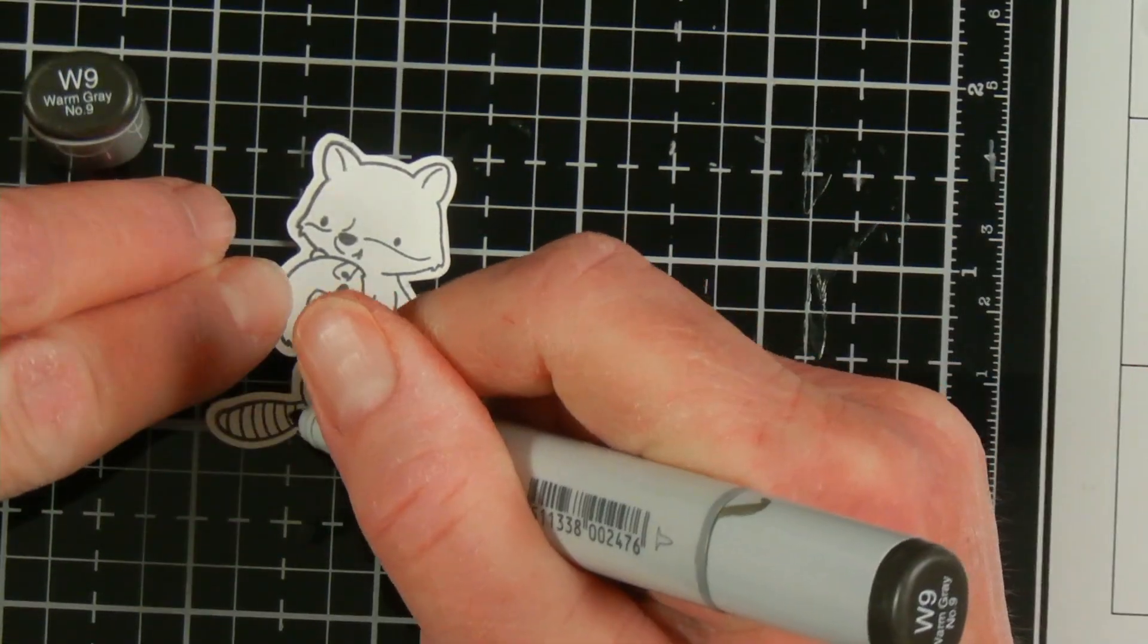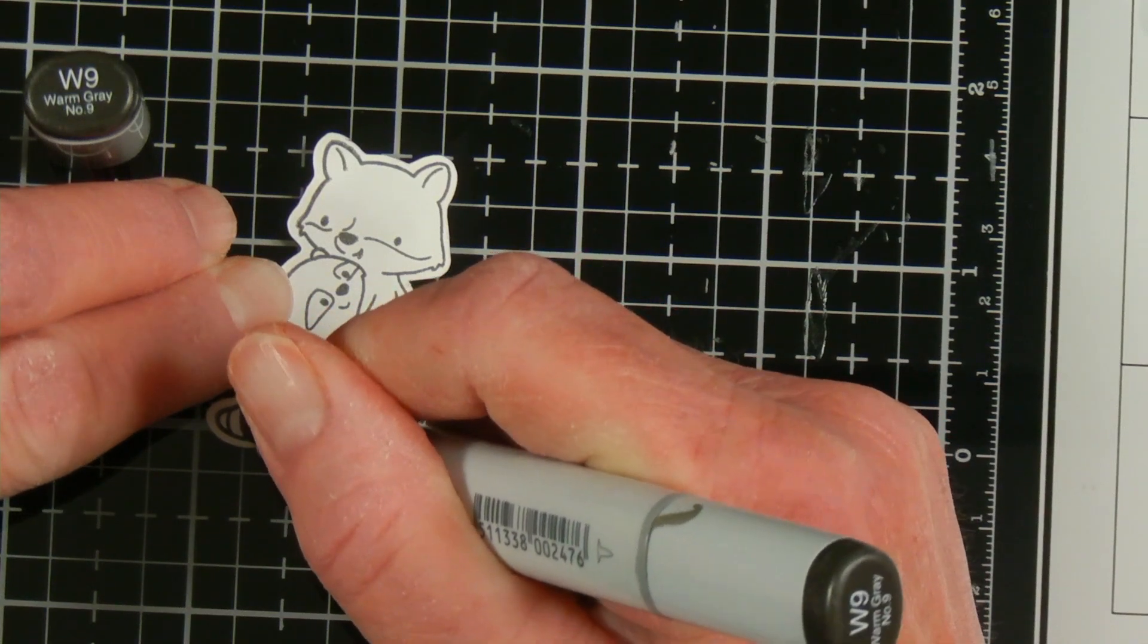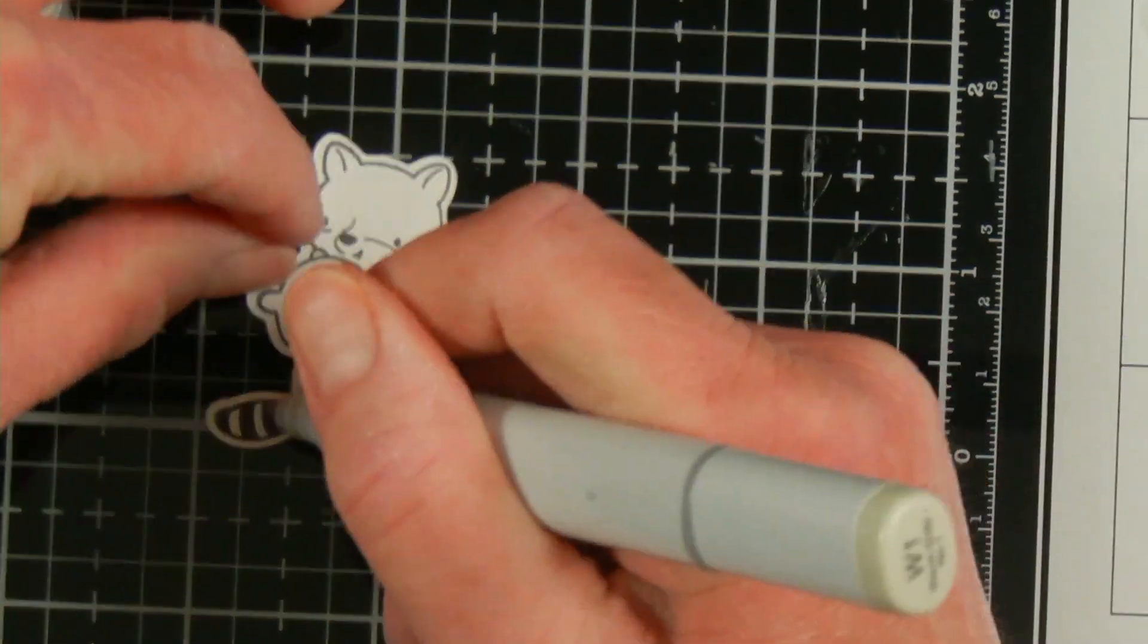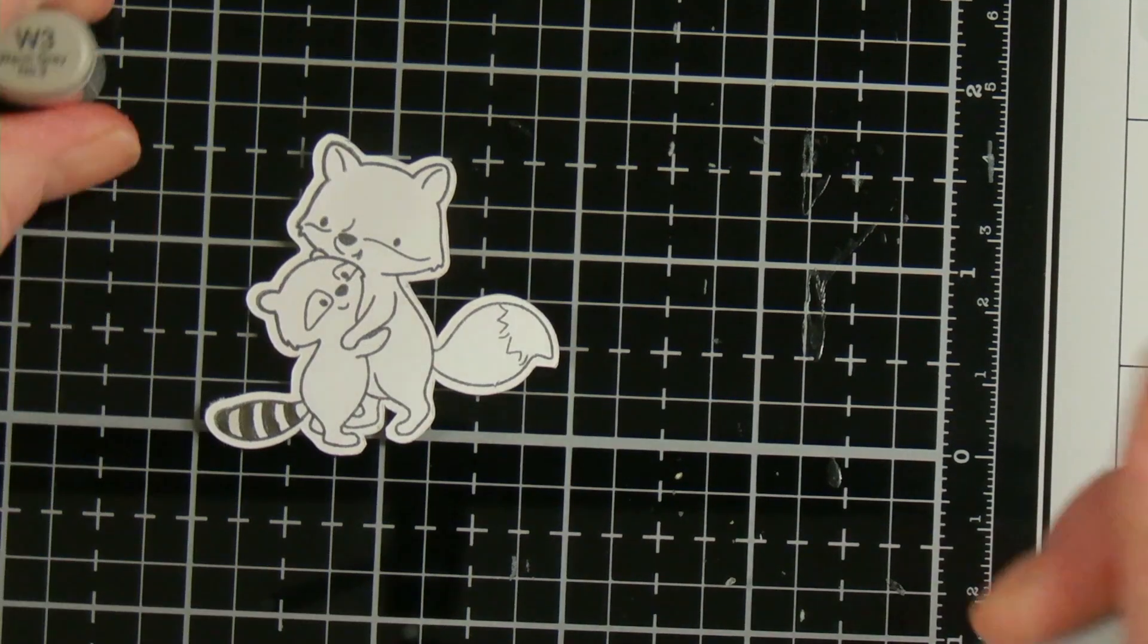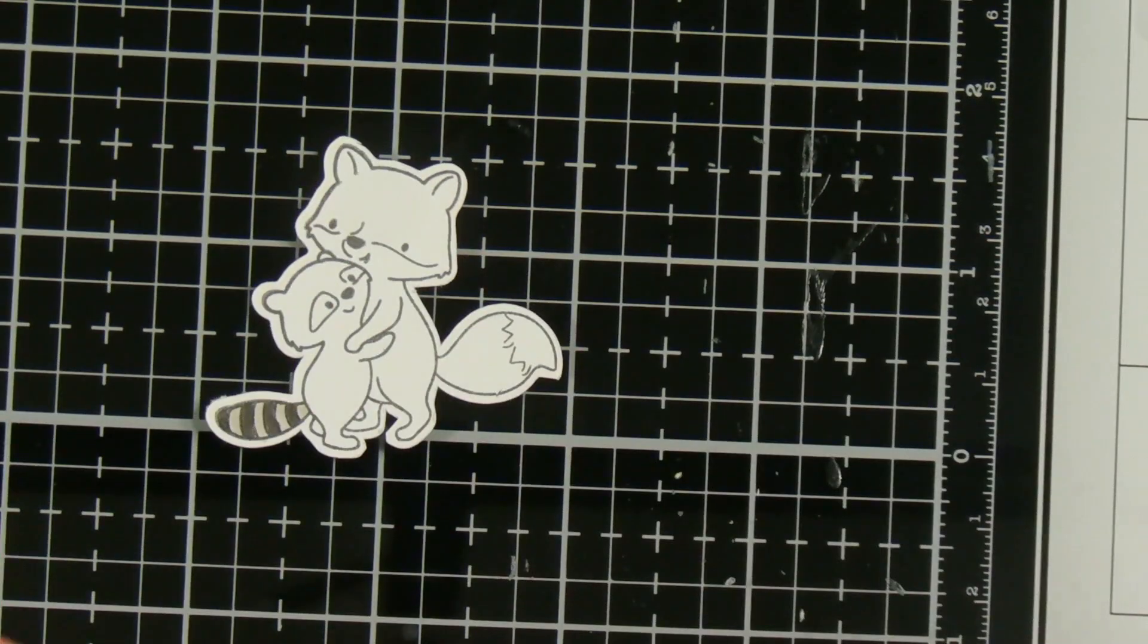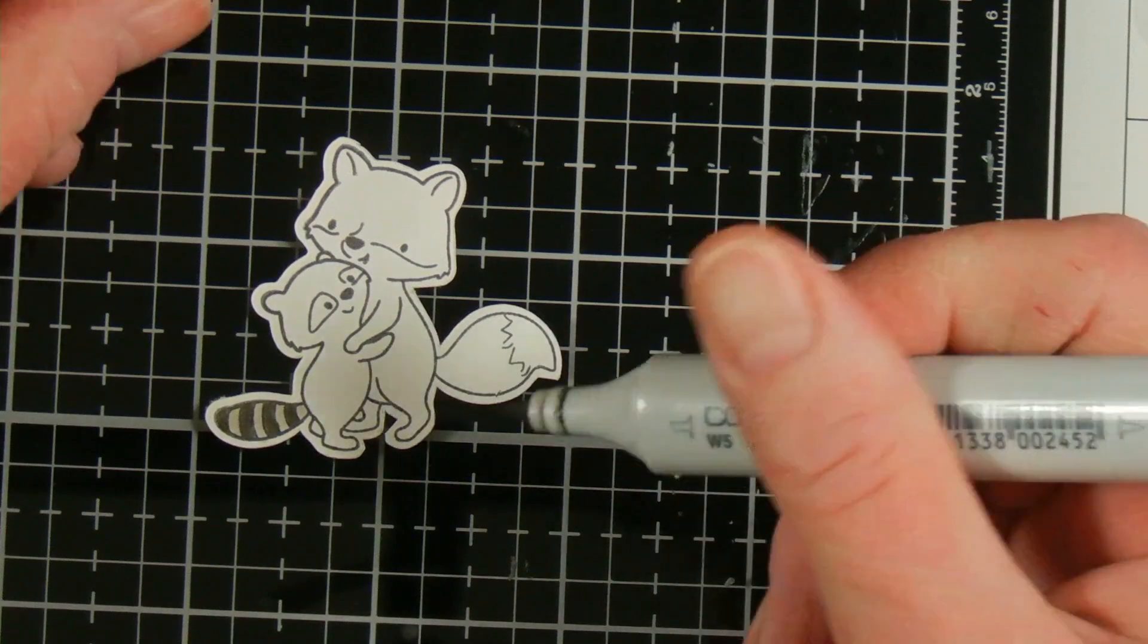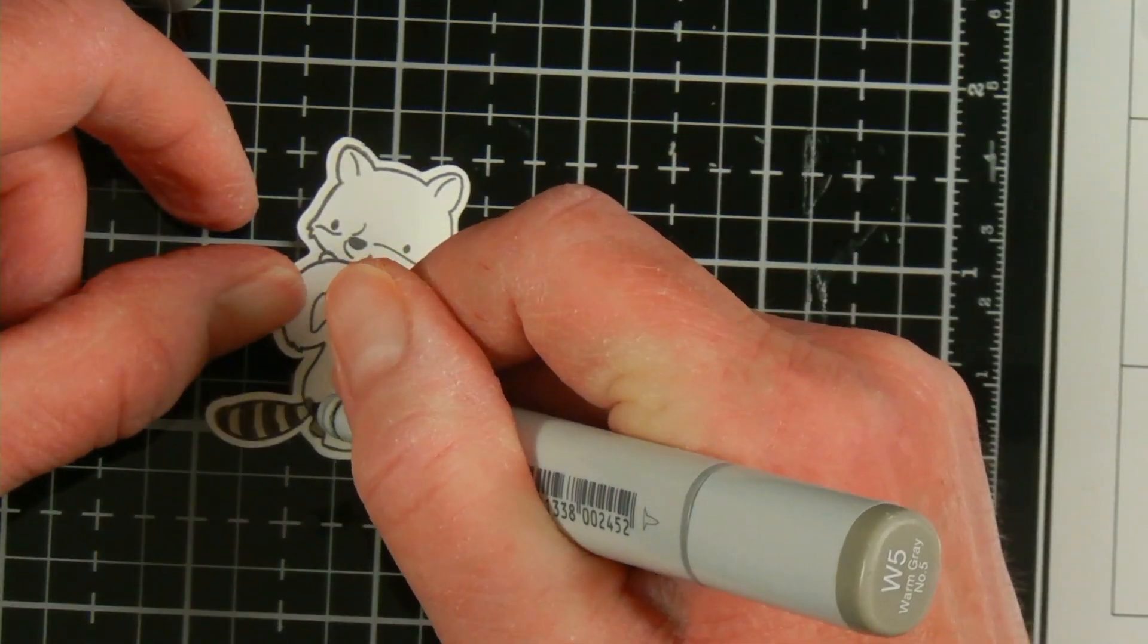For my stamped image I used Neenah White Cardstock which is Copic Friendly, and I also used Lawn Fawn Jet Black Ink which is also Copic Friendly. My stamped image comes from Hello Bluebird from their Big Hugs Woodland stamp set. This is a Raccoon and a Fox stamp, and it came from the same set that the Hugs Word came from. I'm just using my warm grays of Copics to color these in.